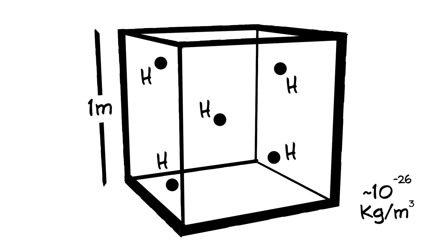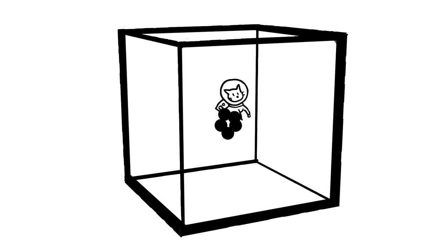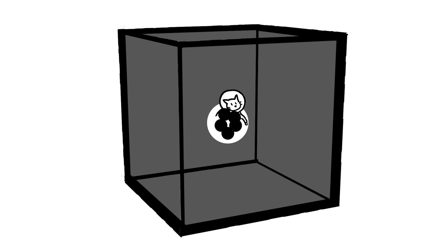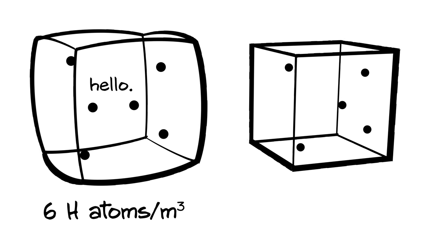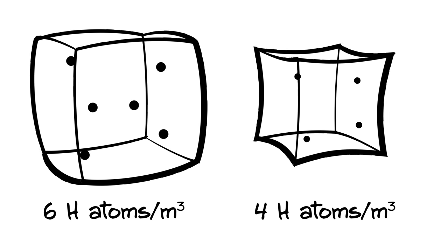This perfect amount is the equivalent of 5 hydrogen atoms per cubic meter of space, on average. Those big empty parts of space make up for all the atoms we have crammed in here around us. If instead there were 6 hydrogen atoms per cubic meter of space on average, or 4, the entire universe would have been a lot more curved, or a lot less.